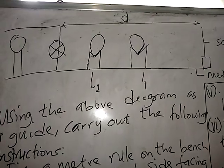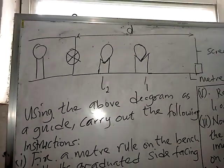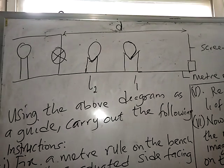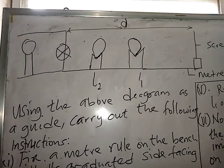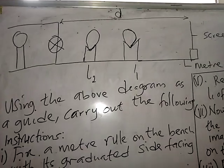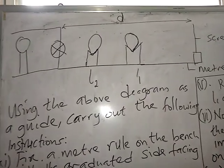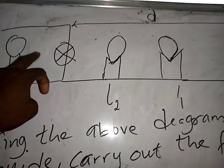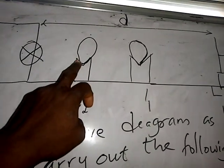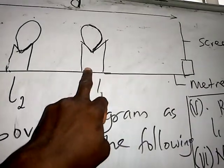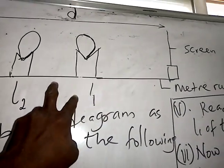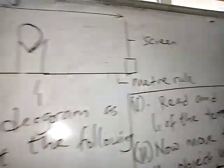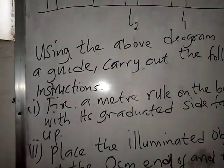This experiment is on optics, specifically on a converging lens. We will use the diagram above as a guide. The diagram on the left shows the ray box, which is the illuminated object. L1 and L2 are the positions of the lens at different instances, and Y is the screen.